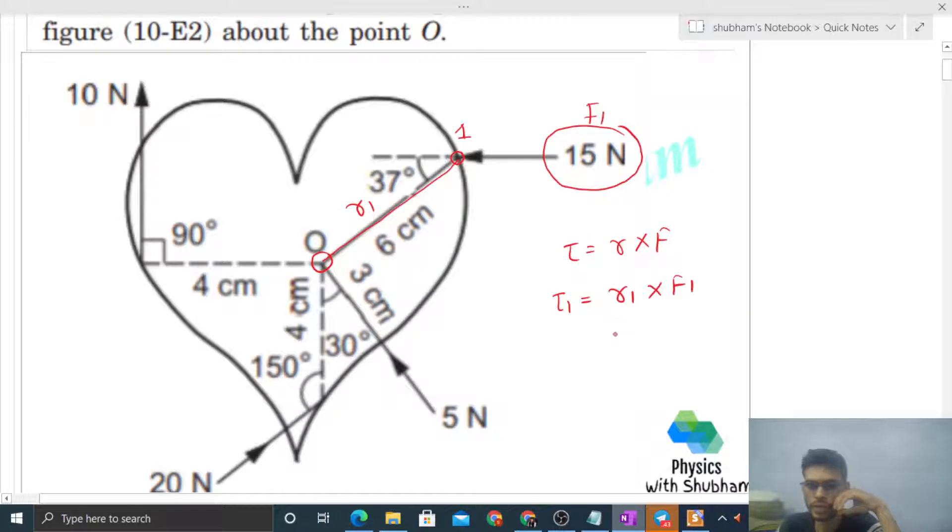If I talk about its magnitude, it will be r1 magnitude times f1 magnitude times sine of theta. Now what is theta? Theta is the angle between r1 and f1. So r1's direction is this way and f1's direction is this way. What is the angle? This angle is 37.